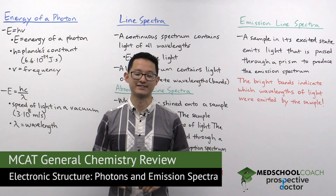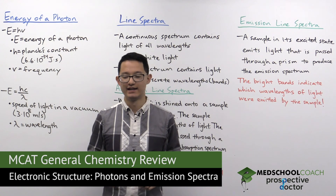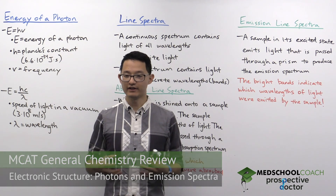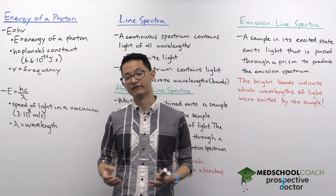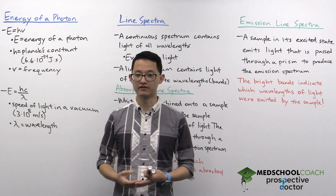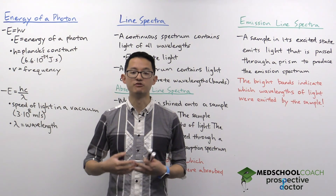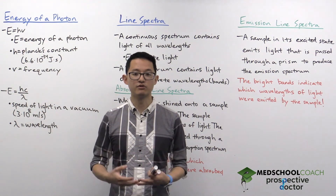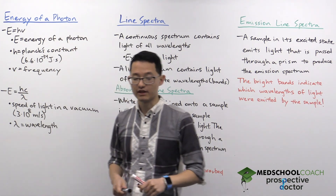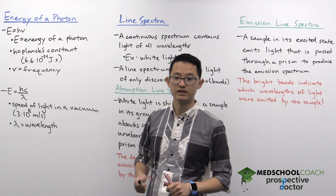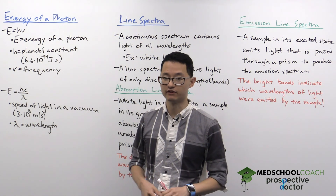Our next topic on electronic structure is photons. We've already discussed photons in the previous video — if you wanted to move an electron from one energy shell to another, you would need to absorb or emit a photon. To begin with, I want to talk about the equations you'll need to know for the MCAT about calculating the energy of a photon.